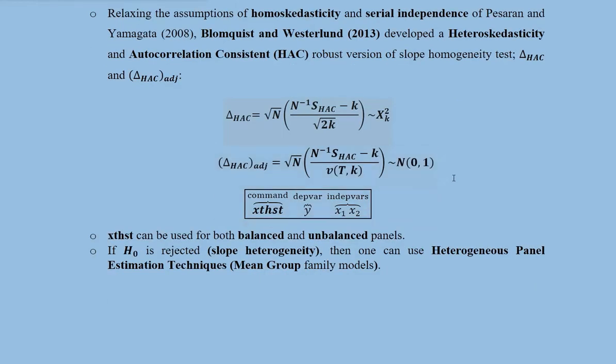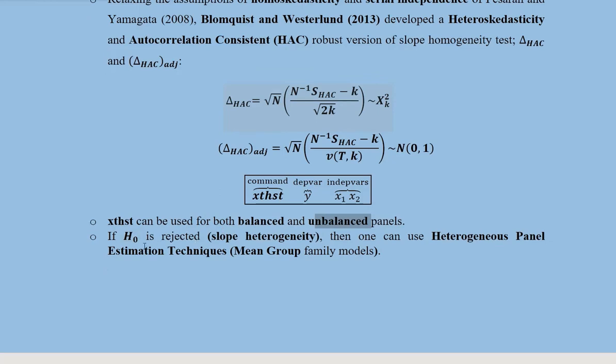Now we finally come to the command that we are using in Stata. This is the command XTHST. This is the keyword. Then we write the dependent variable and the independent variables. This command is applicable for both balanced and unbalanced data sets. So this is another convenience for us. The null hypothesis, if it is rejected, that is the slope heterogeneity will be there. Because the null hypothesis is in favor of slope homogeneity. So if it is rejected, there will be slope heterogeneity.